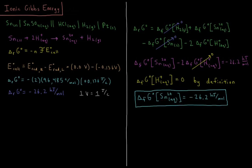This video will discuss the Gibbs energy of ions in solution. If we imagine we have the following type of electrochemical cell, at our anode on the left where oxidation occurs, we have tin solid going to tin 2+ aqueous cations, producing two electrons.